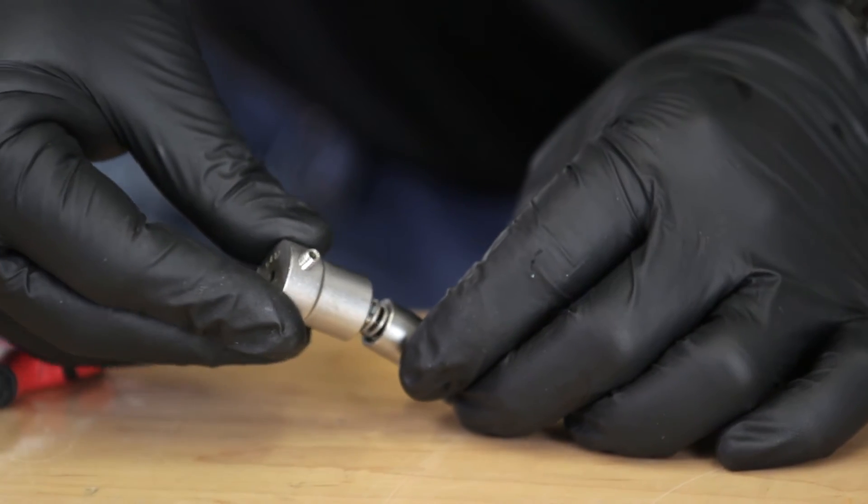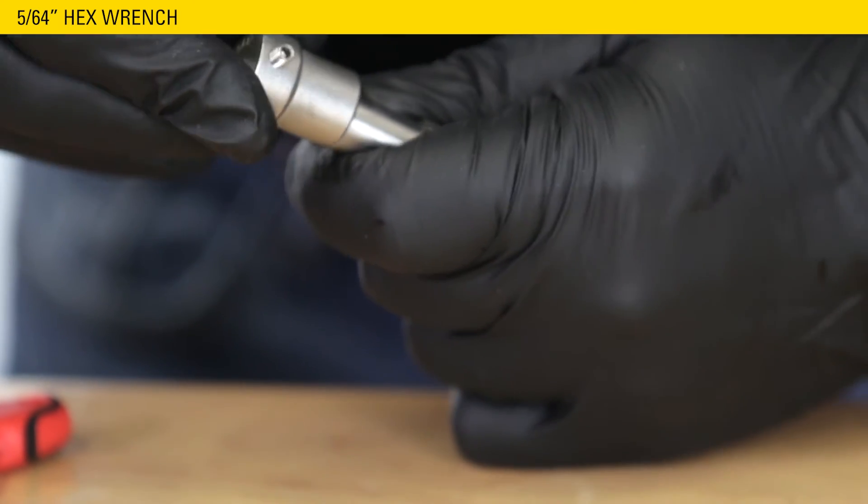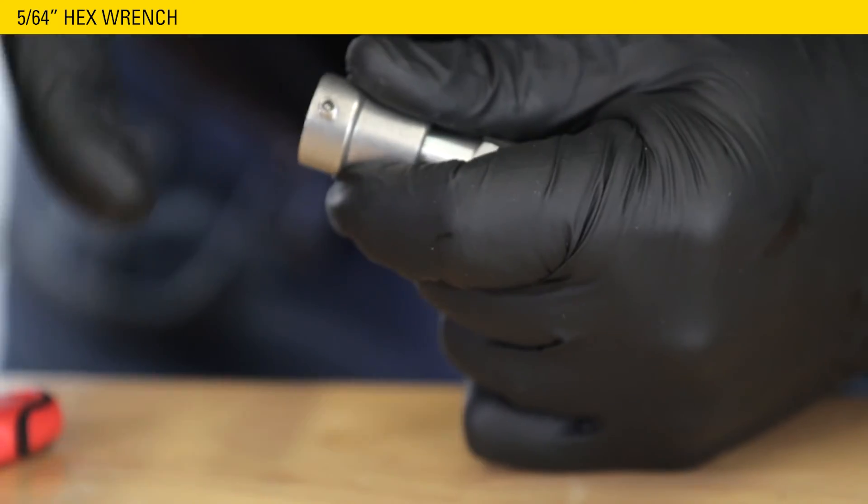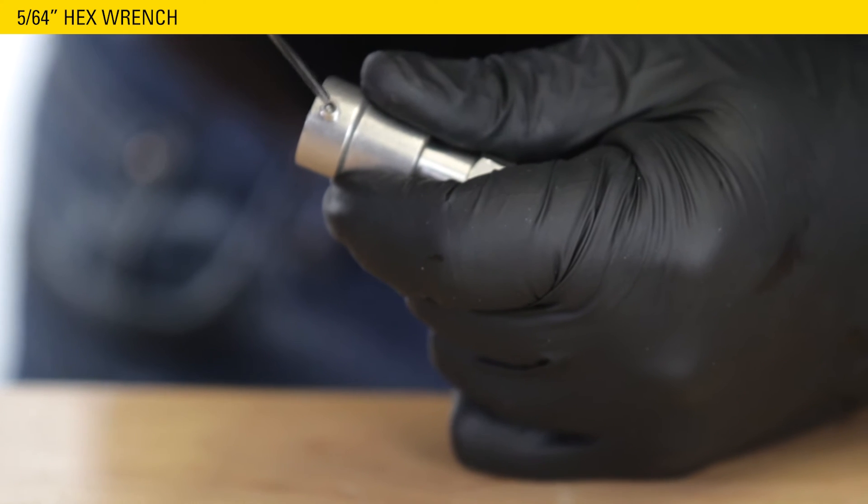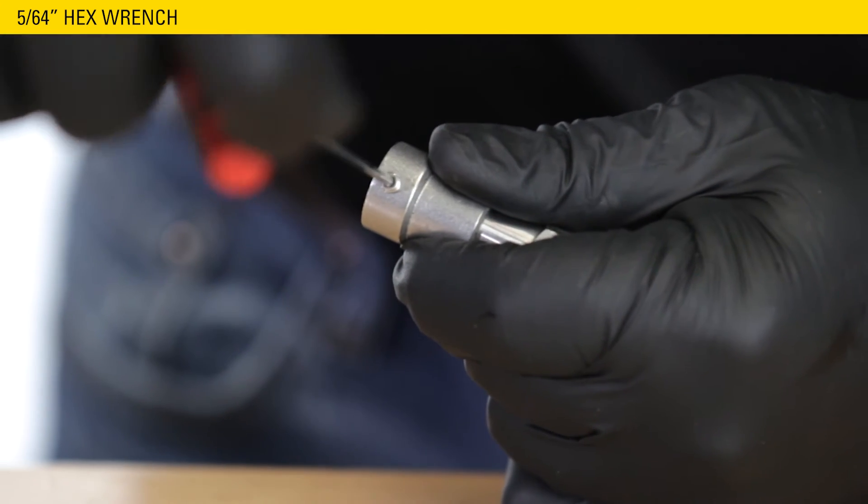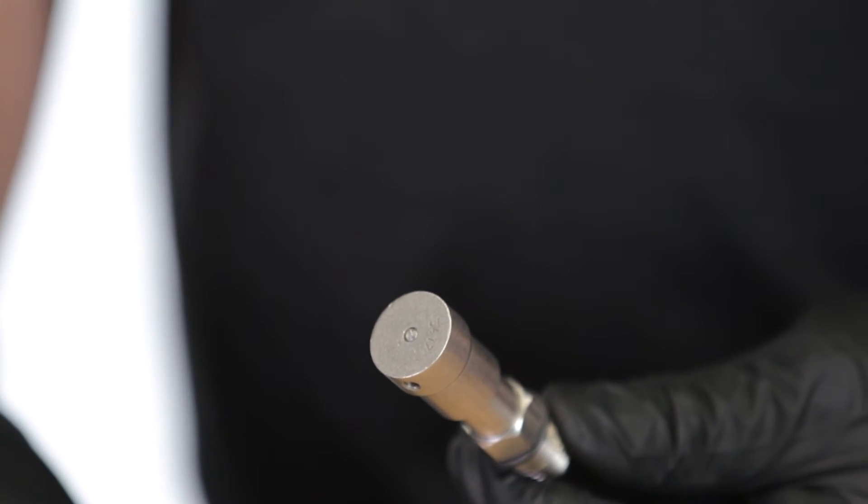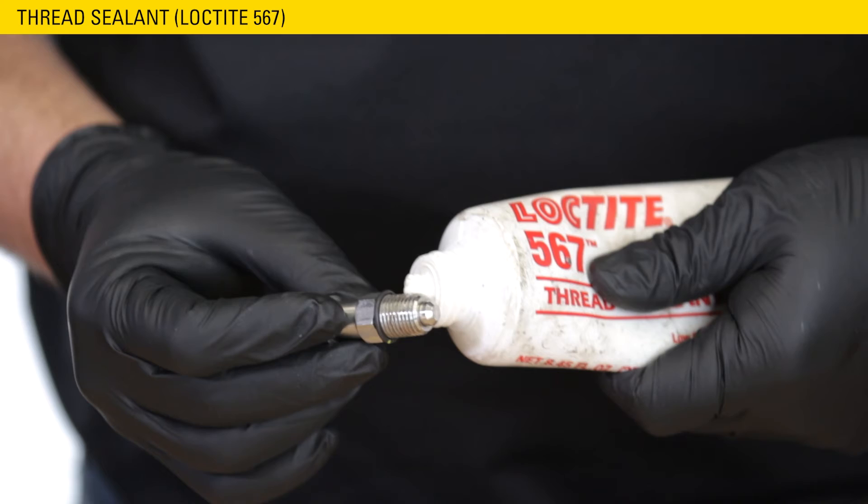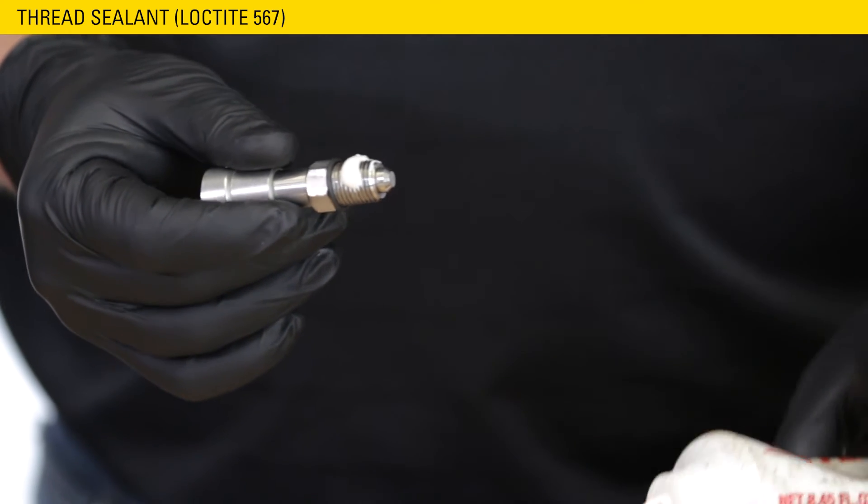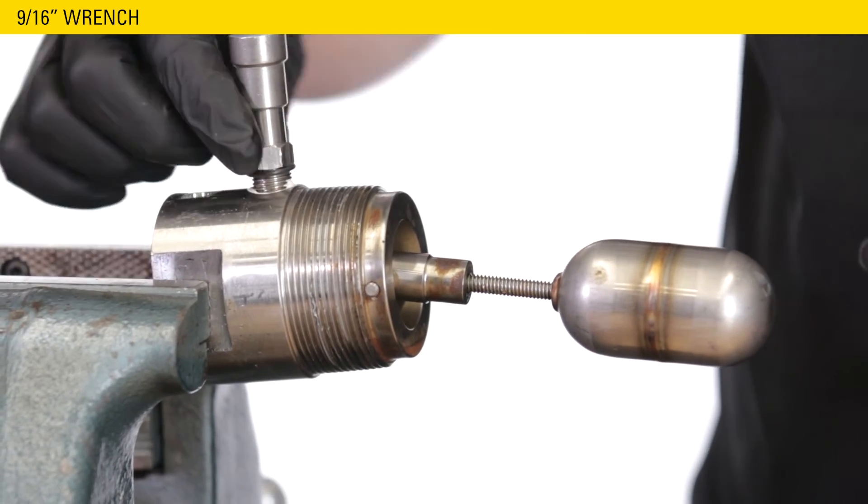Place the cap on top of the spring and compress the assembly to tighten the set screw with the 5-64 hex wrench. Make sure the stem is fully down so the screw catches it. The stem should be flush with the top of the cap. Apply thread sealant to the override fitting threads. Thread the override fitting back into the housing with the 9-16th wrench.